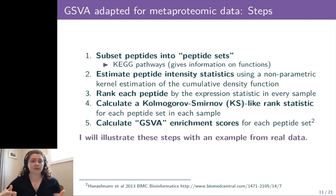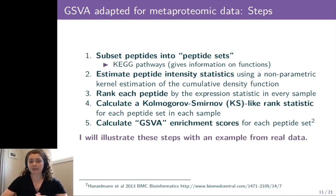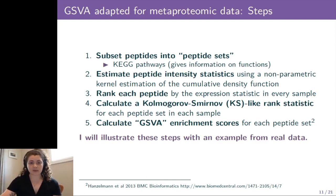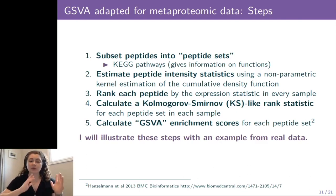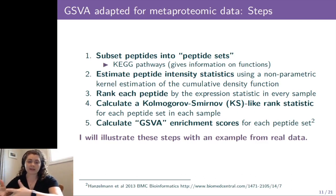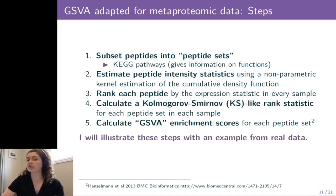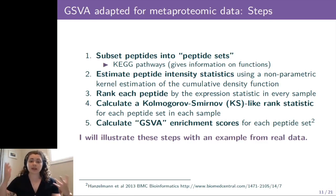We did modify GSVA for peptide intensity data. However, we kept the same five major steps outlined in the GSVA paper. First, we have to subset peptides into peptide sets — we chose to subset them by function using KEGG pathways. We then estimate peptide intensity statistics for each peptide using a non-parametric kernel estimation of the cumulative density function. We then rank each peptide by that expression statistic in every sample from the highest to the lowest intensity. We then calculate a KS-like rank statistic for each peptide set in each sample, and finally calculate a GSVA enrichment score for each peptide set in each sample.